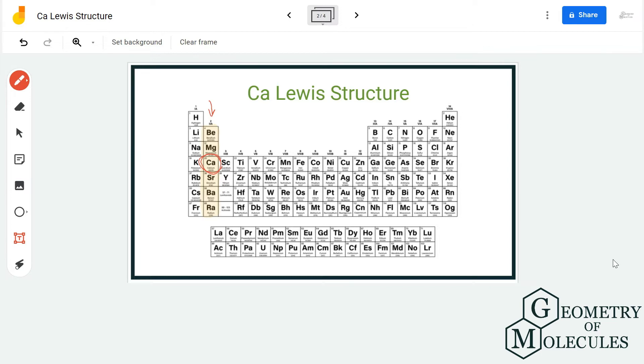So it is essential to first know the valence electrons of an element, and you can know it by using a periodic table because the group number can help you find out the number of valence electrons.